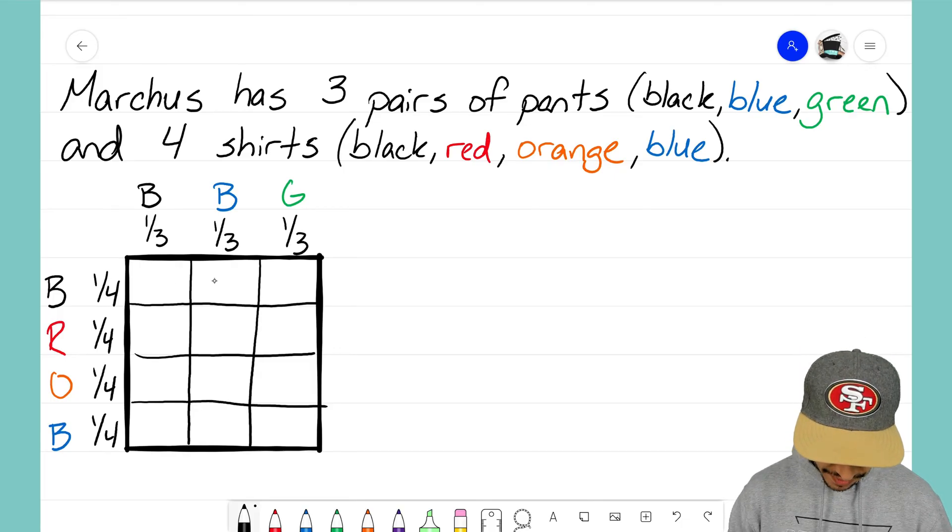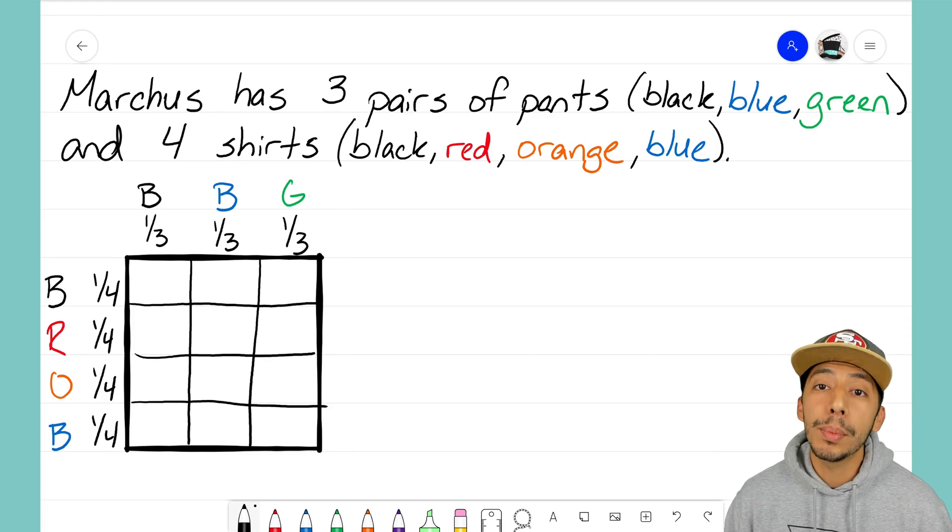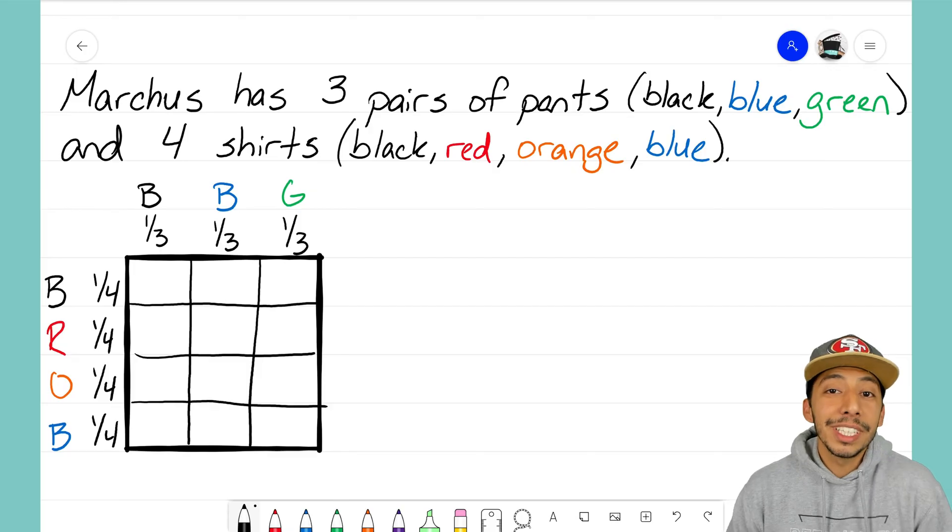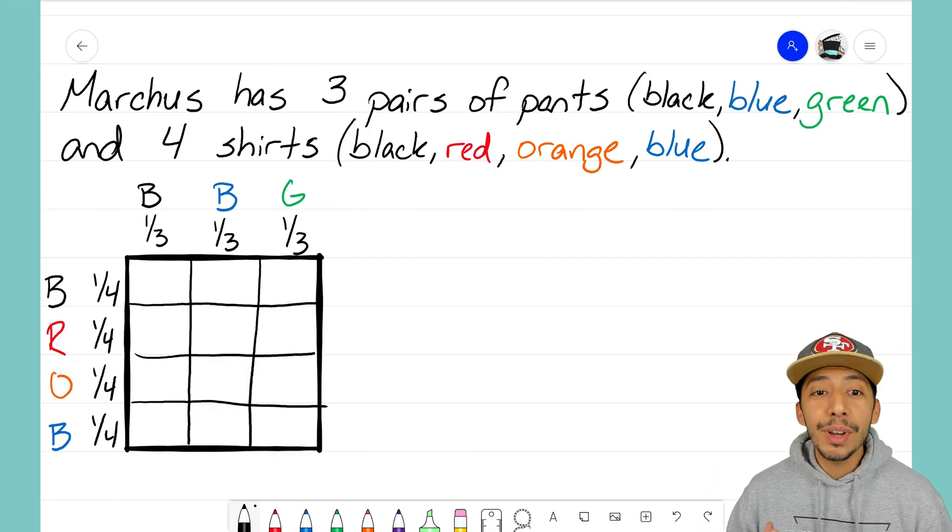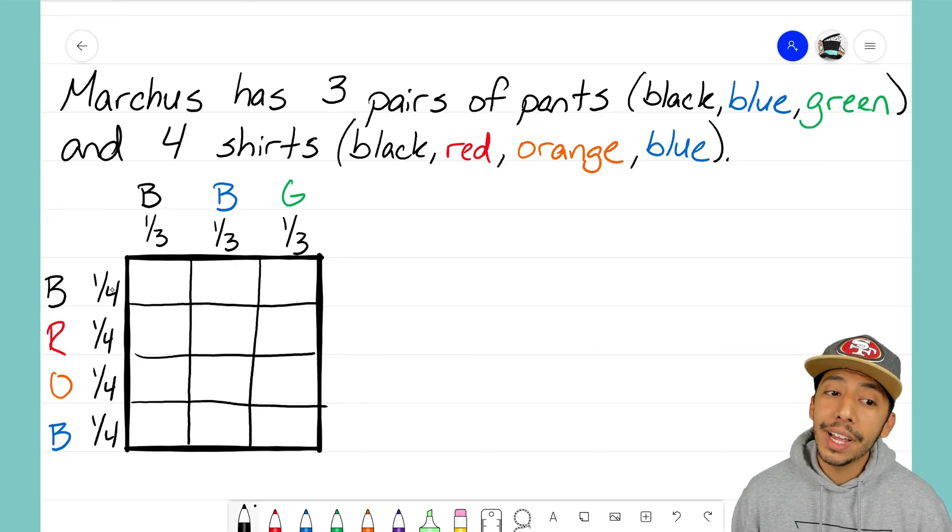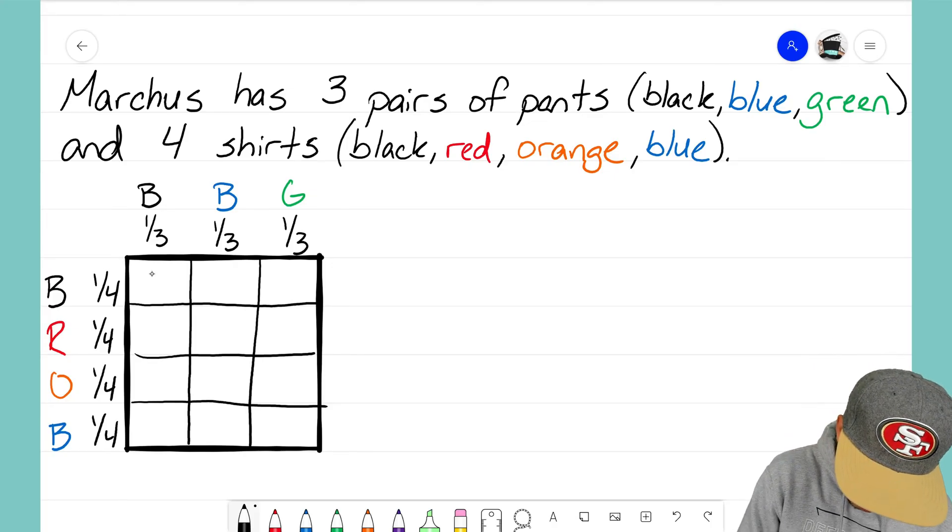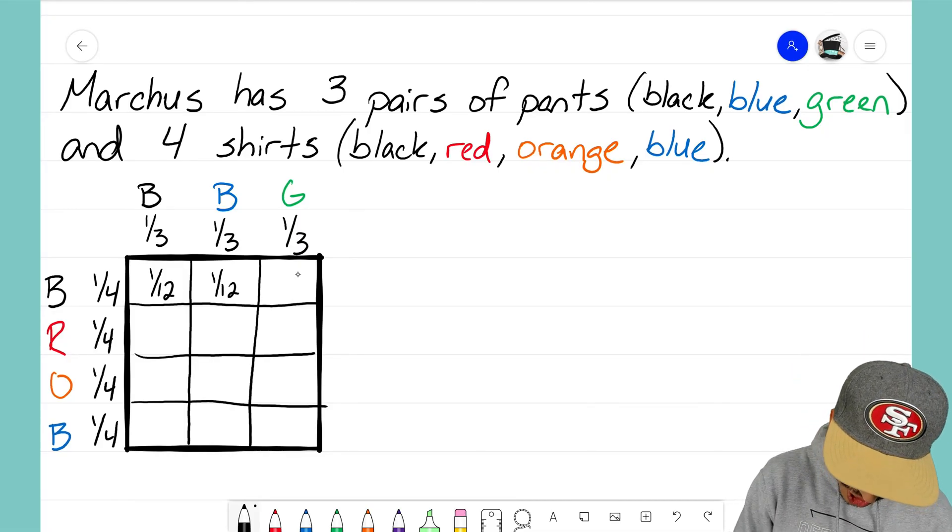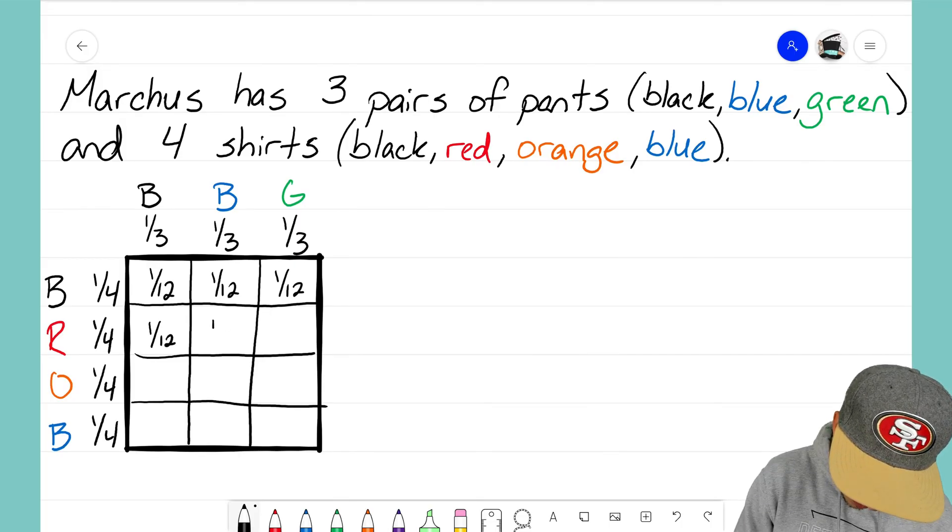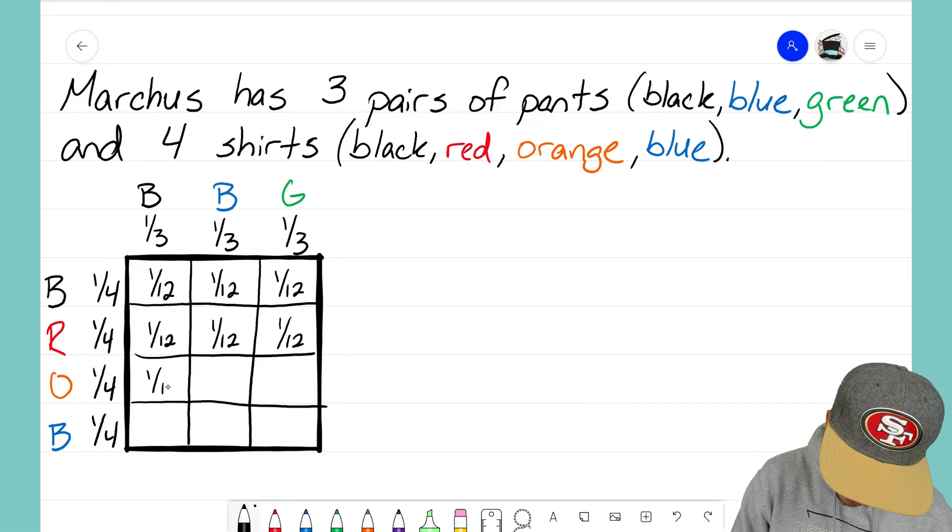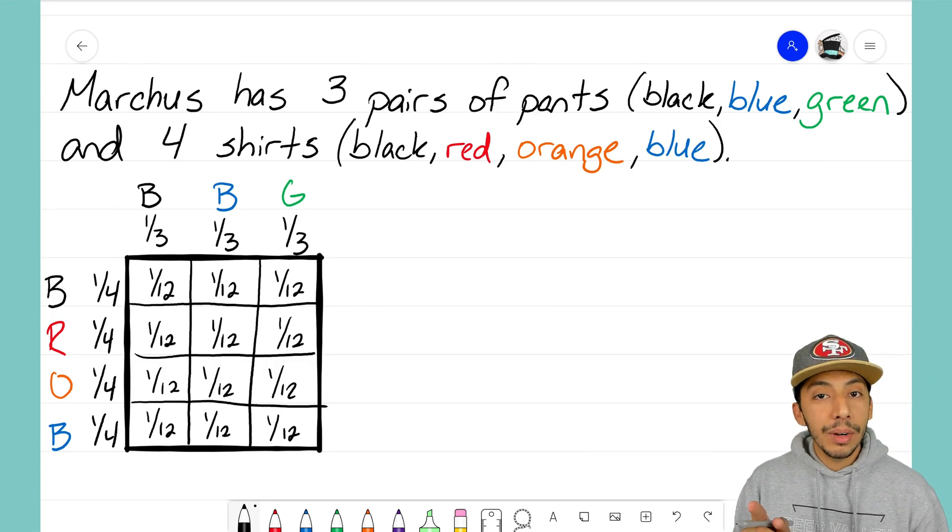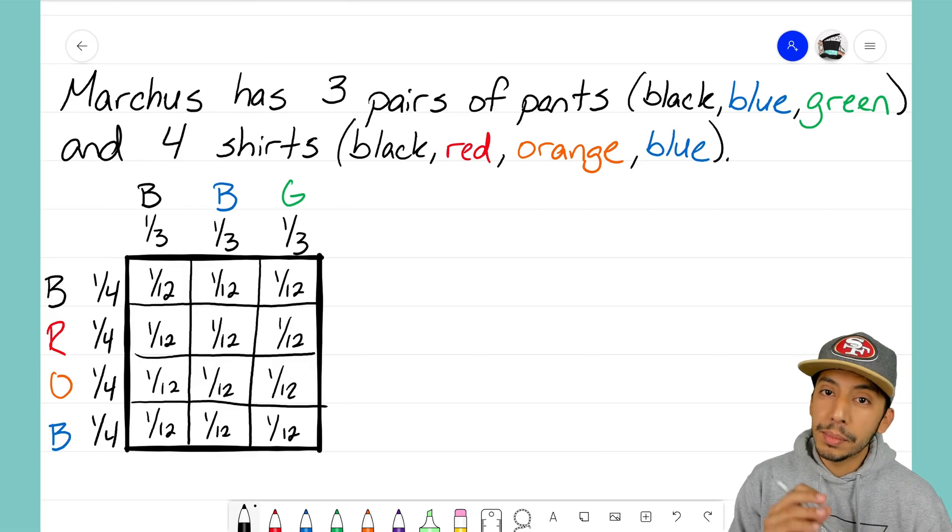This is a very nice simple problem for us because all the fractions are the same, and that means for every box here we will be multiplying one third by one fourth. And one third times one fourth means we're going to end up with one twelfth. That is going to be the fraction that goes into every rectangle here, which means every combination he has for his pair of pants and his shirts are going to be a one in twelve chance. But now that we have this mapped out, it's going to help us solve the problem a little more easily.